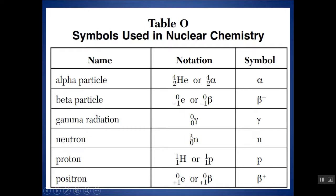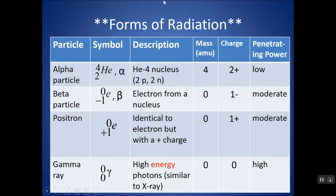A neutron has a mass of 1 and a charge of 0. The top number is mass and the bottom number is charge for all of these symbols. An alpha particle has a mass of 4 and a charge of 2. A proton has a mass of 1 and a charge of 1. An alpha particle is really just a helium-4 nucleus — two protons and two neutrons — giving it a mass of 4 on top and charge of 2 on the bottom.